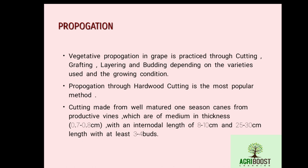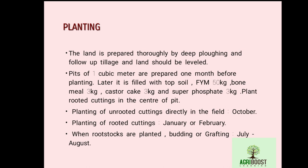The cutting should be made from well-matured one-season cane from a productive vine of medium thickness — 0.7 to 0.8 cm. The internodal length should be 8 to 10 cm, and the cutting should be 25 to 30 cm in length, having at least 3 to 4 buds. This is the ideal cutting for propagation of grape.